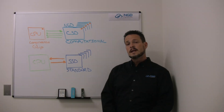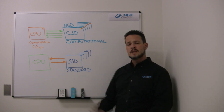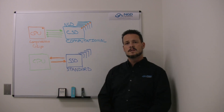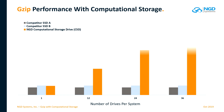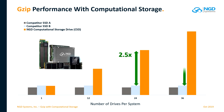If we take a look at the performance of this particular system, you'll see that with the standard SSDs, regardless of the number of drives in the system, you get no gain in performance — you simply get capacity. Whereas with the computational storage devices, you actually have the ability to get up to two and a half times the performance in a standard 2U server.